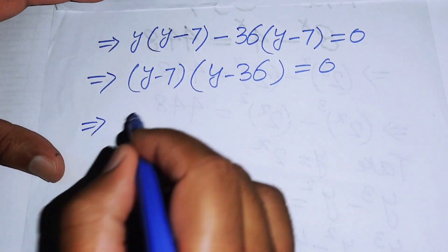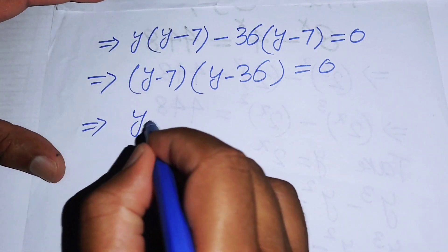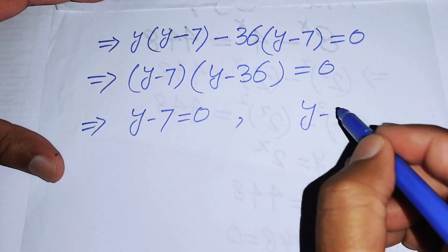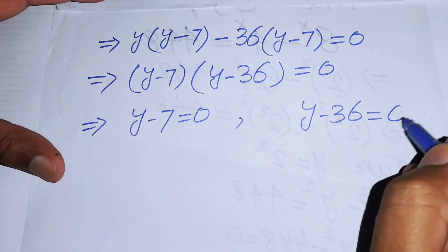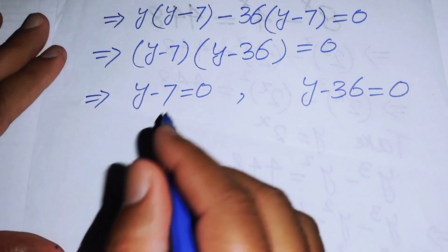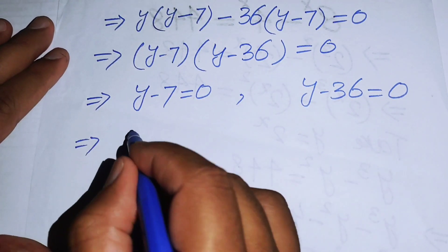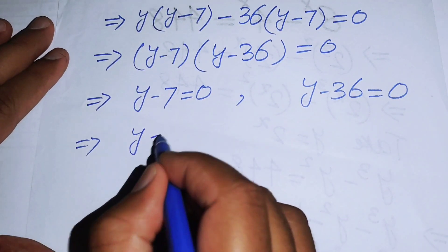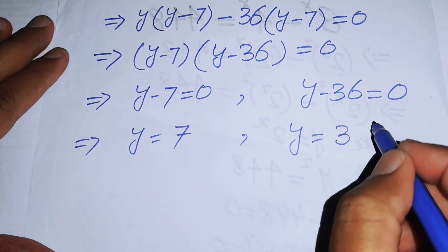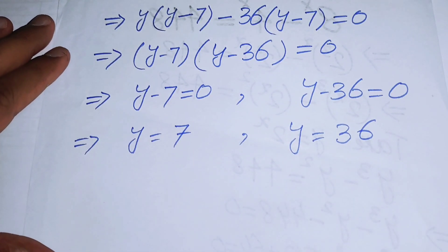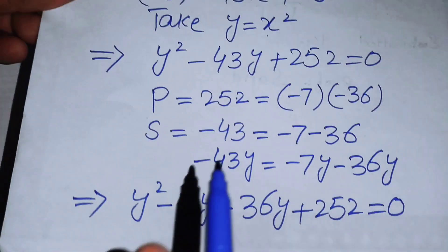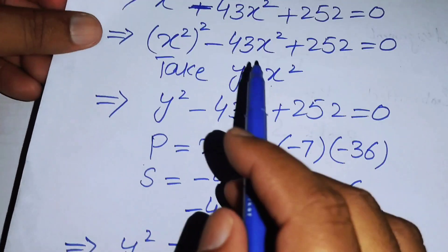Taking (y - 7) common from both terms gives (y - 7)(y - 36) = 0. This gives two cases: y - 7 = 0, so y = 7, and y - 36 = 0, so y = 36.